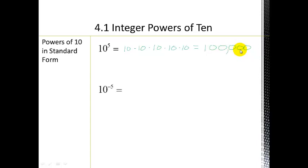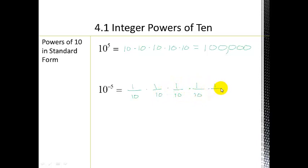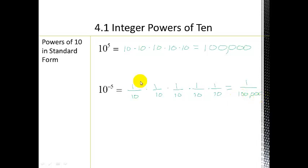What about 10 to the negative 5th? That's the same as 1/10 multiplied five times, which equals 1 over 100,000. This number is really small because it's less than 1. Notice it still involves 5 zeros.